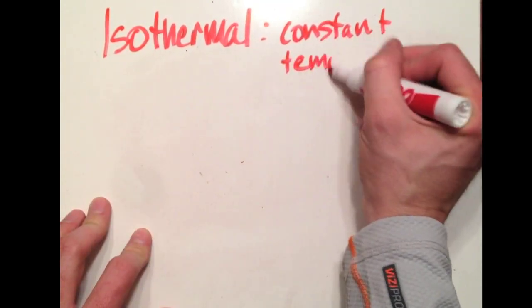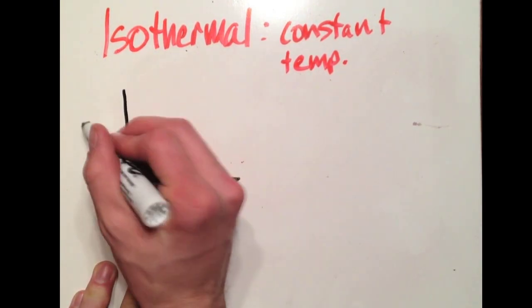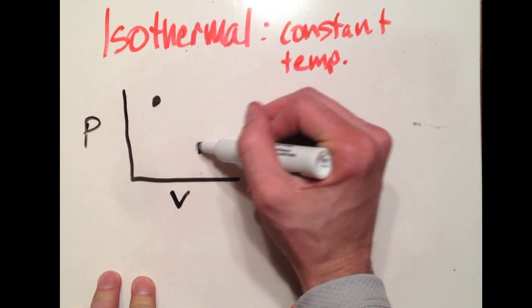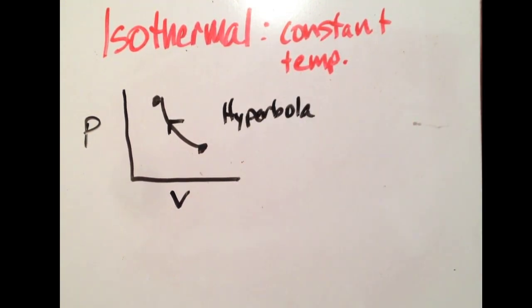The next type of process is an isothermal process. The name isn't as creative here. This is constant temperature. A constant temperature process on a PV diagram looks something like this. It is a hyperbolic line, and it is always concave up.